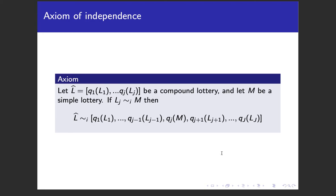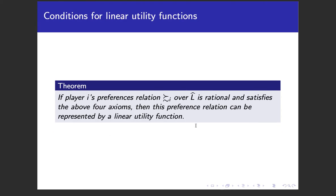The fourth axiom is the axiom of independence. If lottery J is indifferent to lottery M for agent i, then you can substitute M for J in a compound lottery and the agent will be indifferent between the two compound lotteries. Since the agent is indifferent between LJ and M, and the same probability is assigned to each position, they must be indifferent between the compound lotteries.